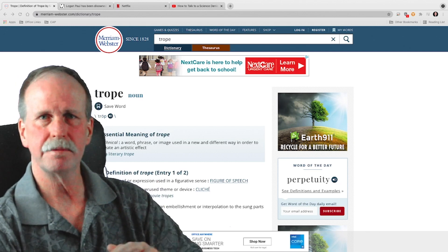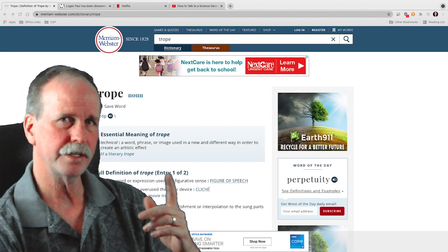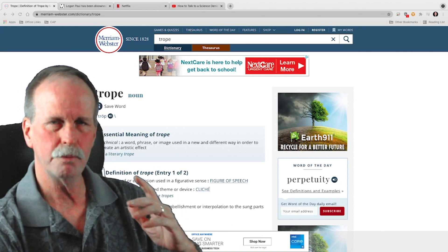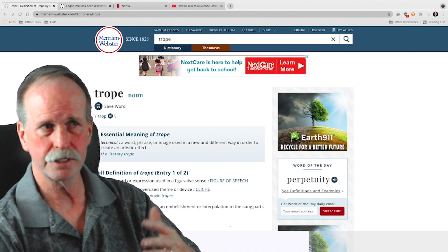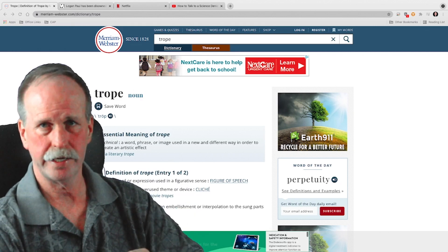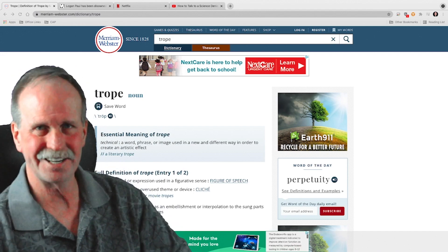In the meantime, this is Bob the Science Guy signing out from Northern Michigan. Thank you for stopping by. I hope you found this interesting. Check out the description for a link to the book. It's $20 on Kindle. It's well worth the read. So until next time, take care.